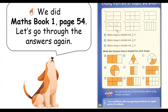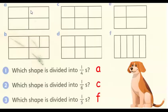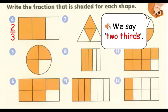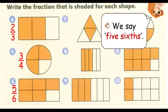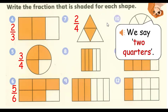We did maths book one, page 54. Let's go through the answers again. We say two thirds. We say three quarters. We say three quarters. We say five sixths. We say five sixths. Three quarters.